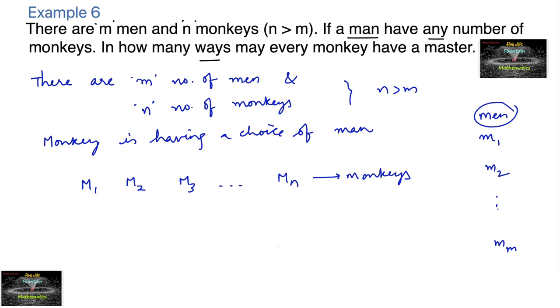So each monkey has a choice of m men. The first monkey will have a choice of m men, and the second monkey will have a choice of m men.